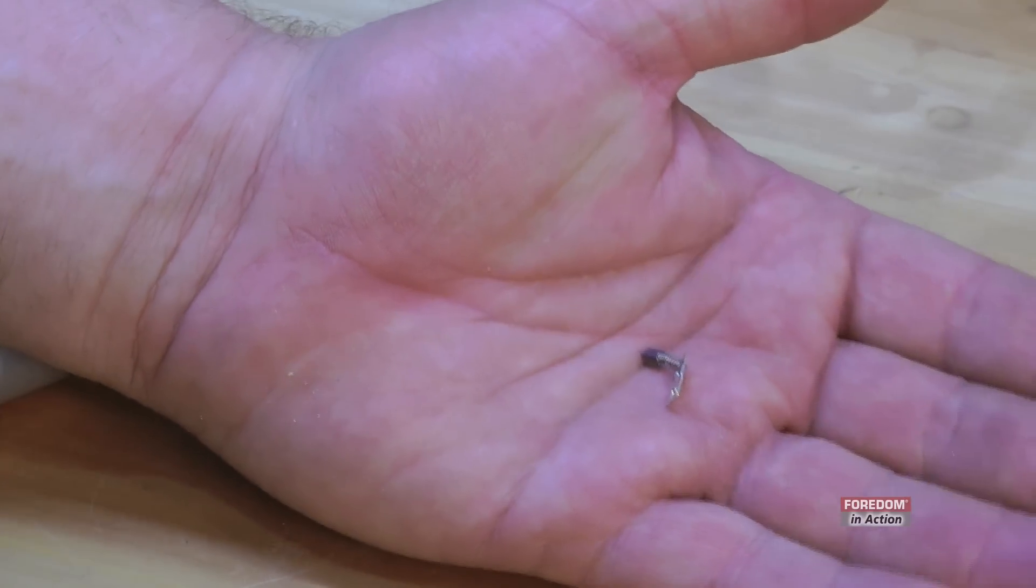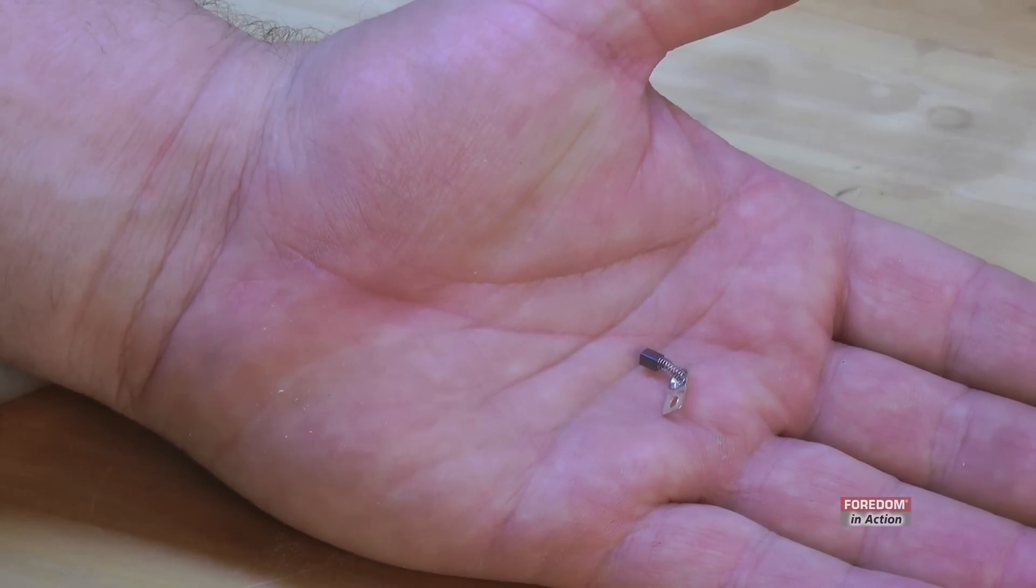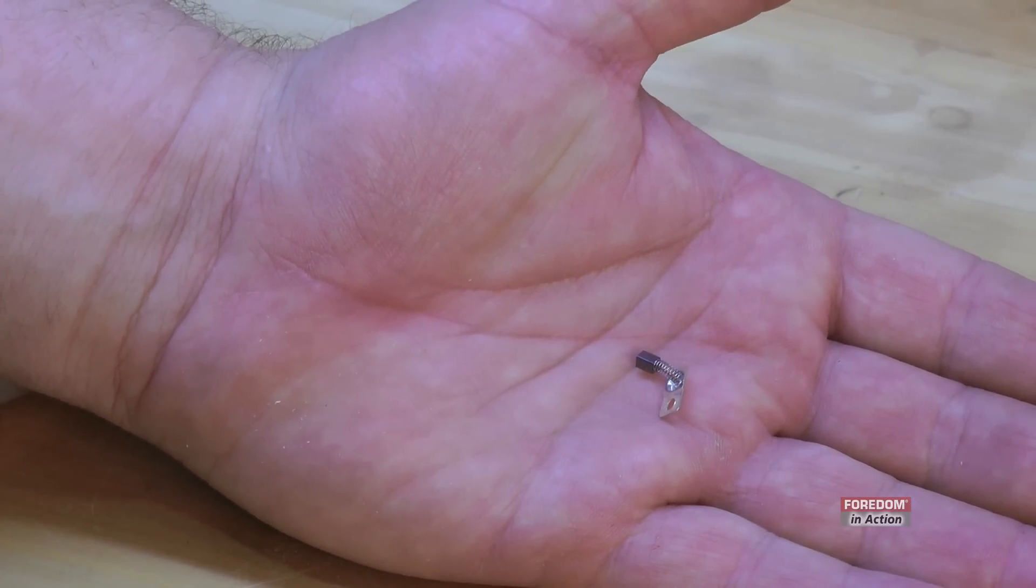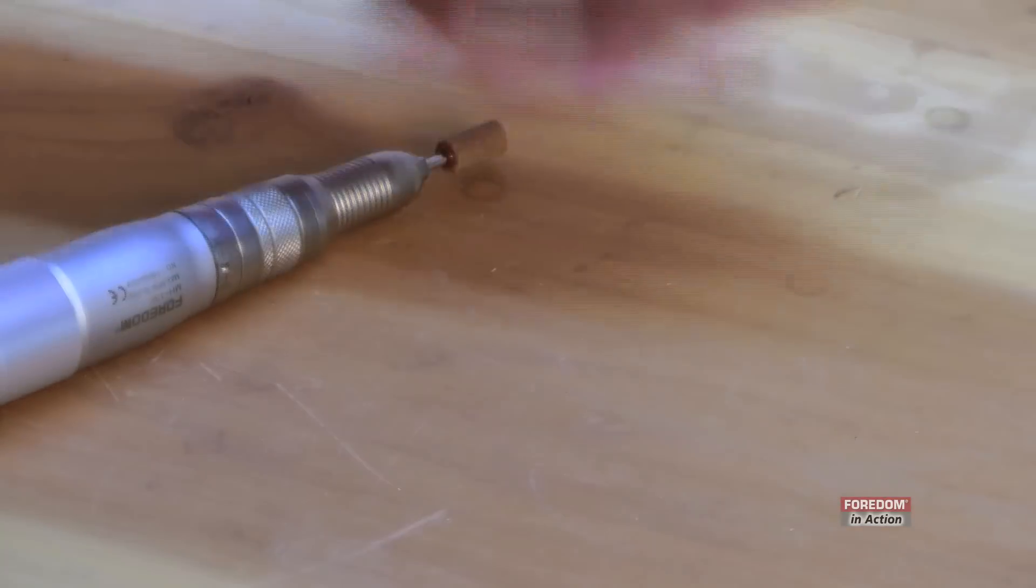Let me show you the motor brushes that it comes with. These are the motor brushes right here. They're very small. They're about two and a half millimeters long. When they get down to one millimeter, you need to change them. I'll show you how to do that.